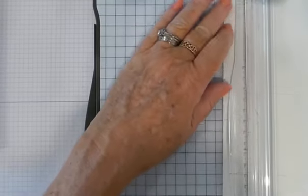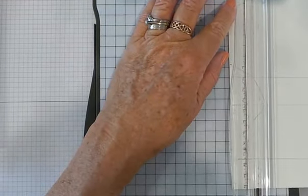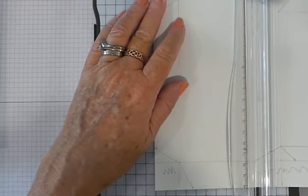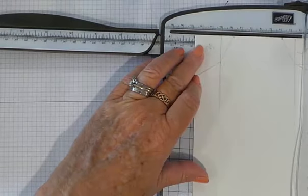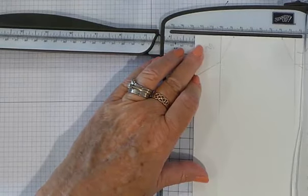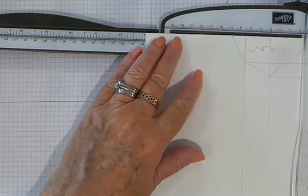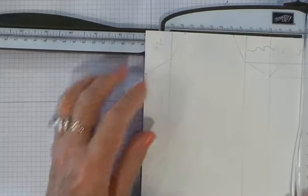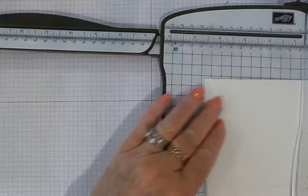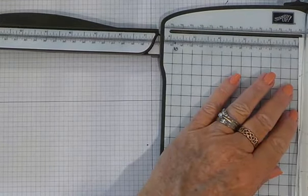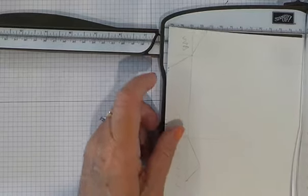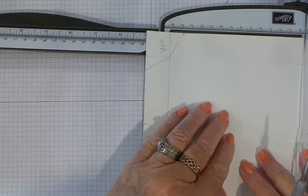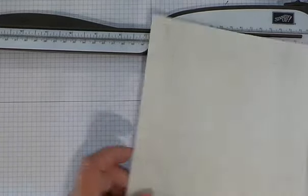So you're going to score at 1 inch on one side or 2.5 centimeters, 4 inches or 10 centimeters, 5 inches or 12.7 centimeters and 7 inches or 17.8 centimeters. So you'll do all those score lines. Then you'll give it a quarter turn and score at 1 inch or 2.5 centimeters and 7 inches or 17.8 centimeters.